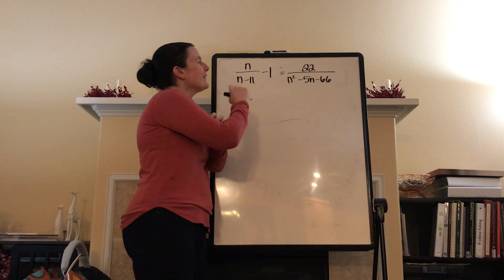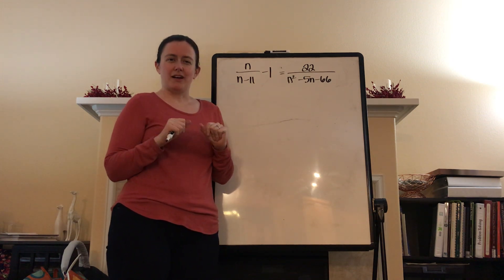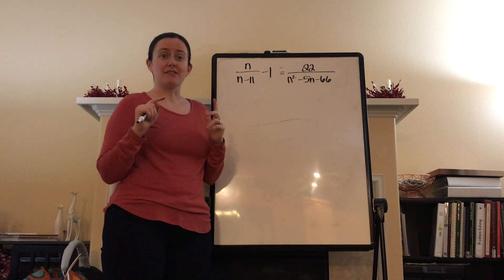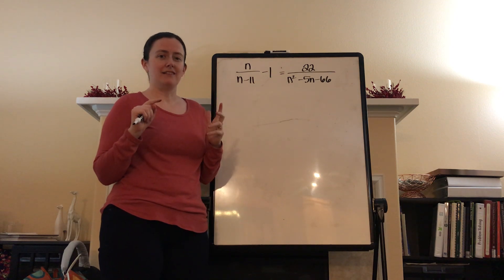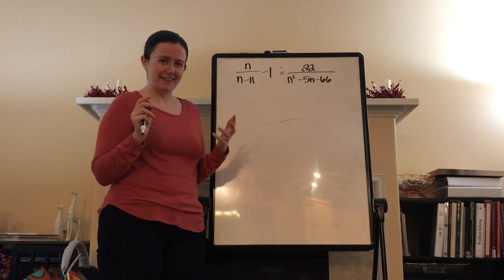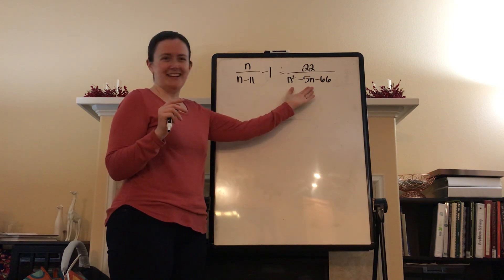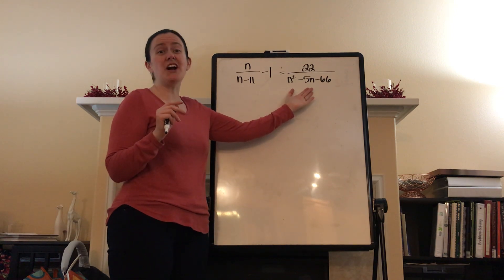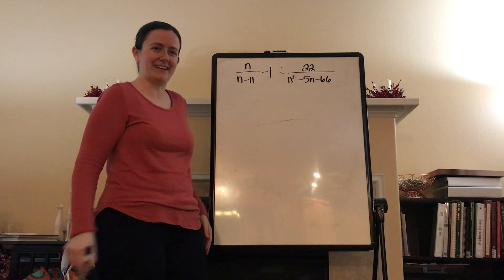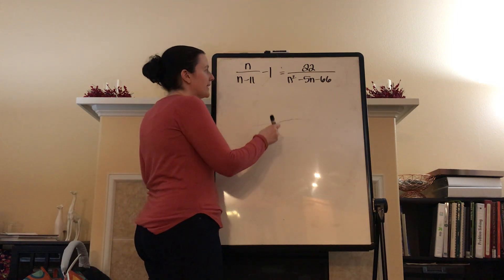The way that we're going to do this is we're going to multiply by the least common denominator. Now, the only way to do that is to find the least common denominator. In order to do that, what do you need to do? Factor! You thought you never had to factor again in your life, didn't you? Sorry.